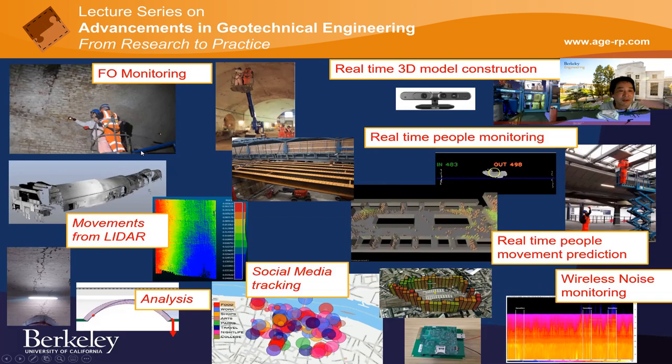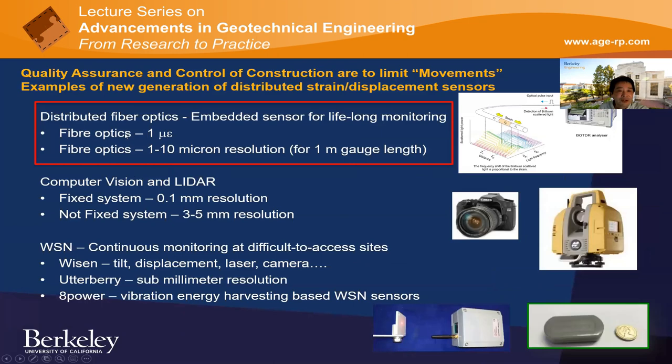In geotechnical engineering, quality assurance and control is largely about limiting movements. There are new generation distributed strain and displacement sensors emerging. The focus today is what I call distributed fiber optic sensing.